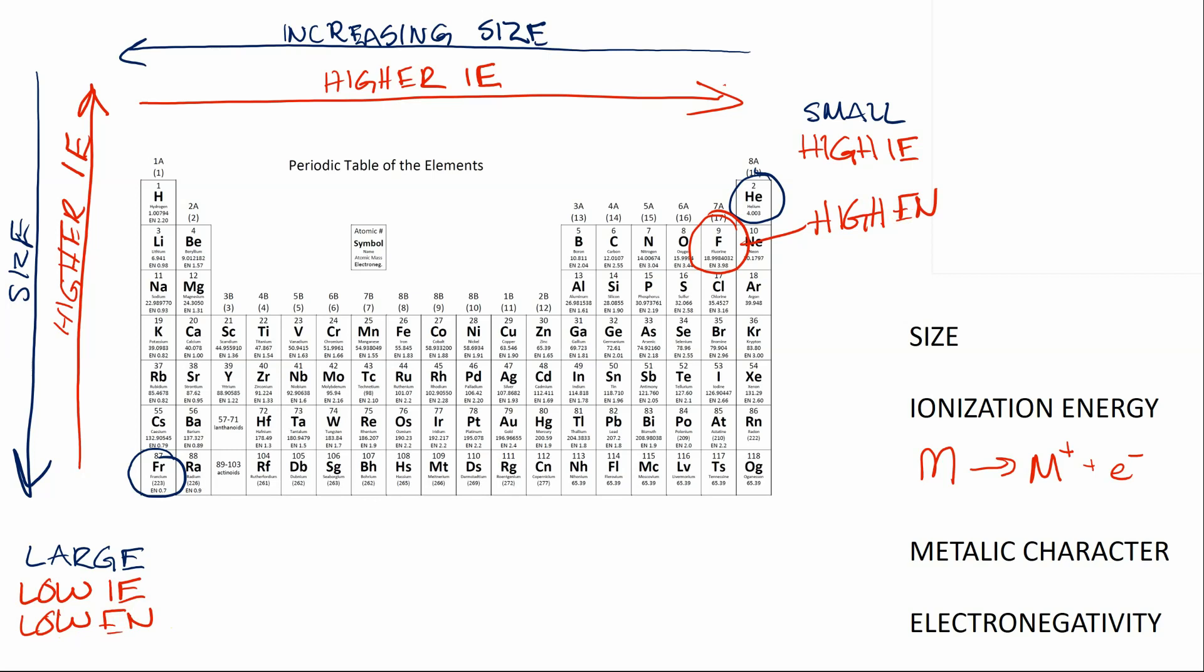So upper right in the periodic table is still the highest, both in ionization energy and electronegativity. Now let's talk a little bit about where these trends come from or what causes them. So all of these are related to the stabilization provided by having the charge of a proton, or the charge of the nucleus, and the charge of the electrons nearby.